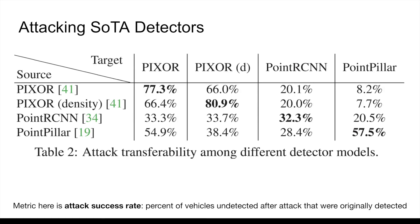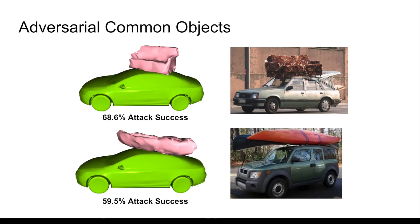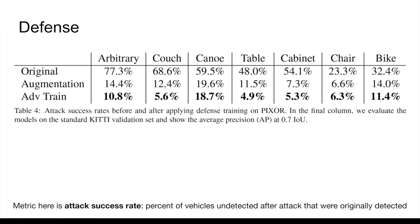Our attack hides vehicles with up to 80% success rate against modern detectors. Furthermore, we show strong adversaries that closely resemble common rooftop objects, like couches and canoes. Finally, with adversarial training, we can successfully defend against the attack, making our work a step towards safer self-driving systems under unseen conditions.